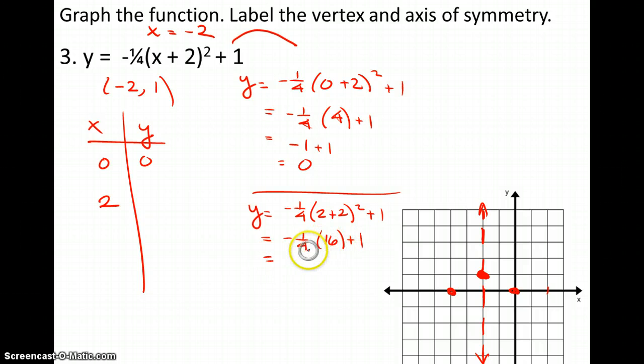I like the number 16 because it will cancel out with the 4. I can cross-cancel. 4 goes into there 4 times. So I have negative 4 plus 1, which gives me negative 3. So I'm going to go out 1, 2, and down 1, 2, 3. And here.